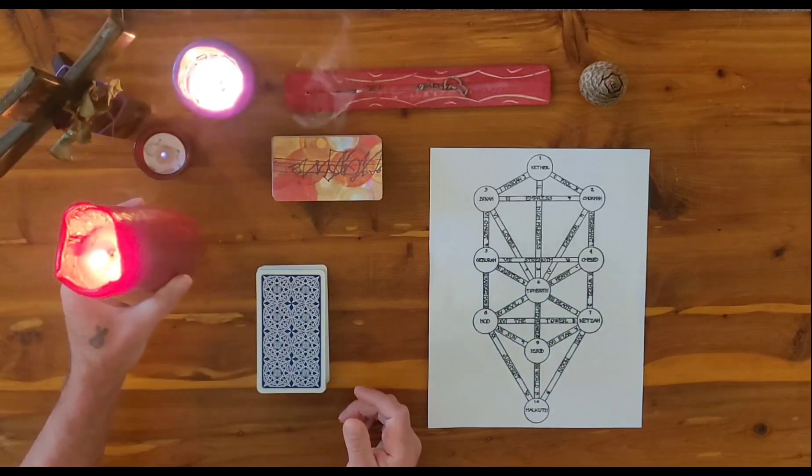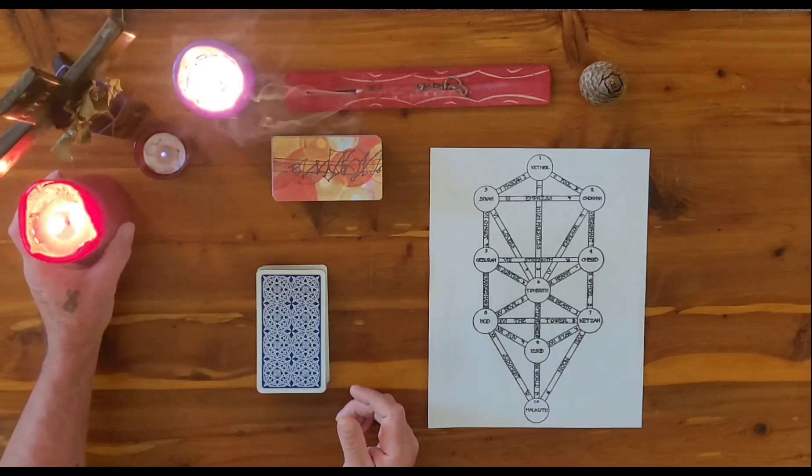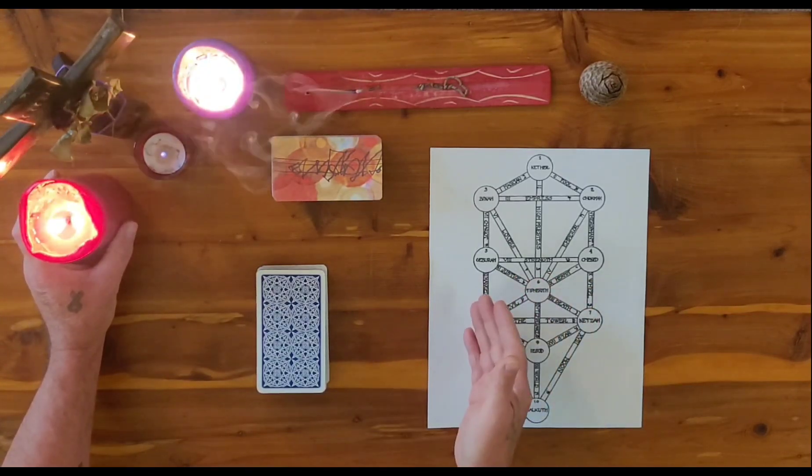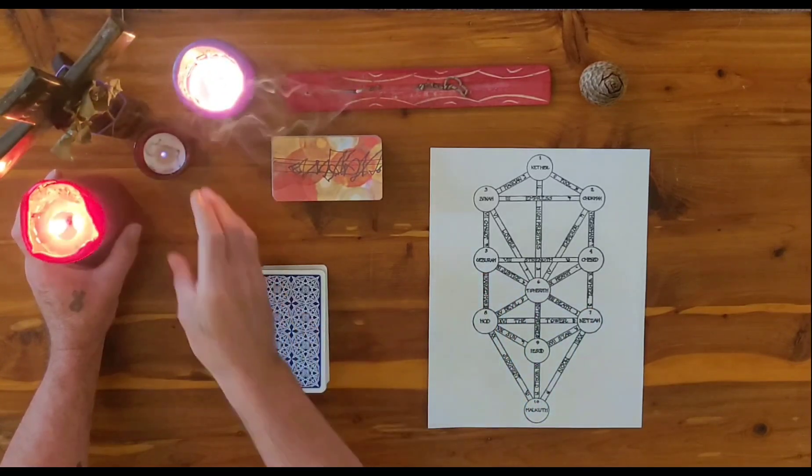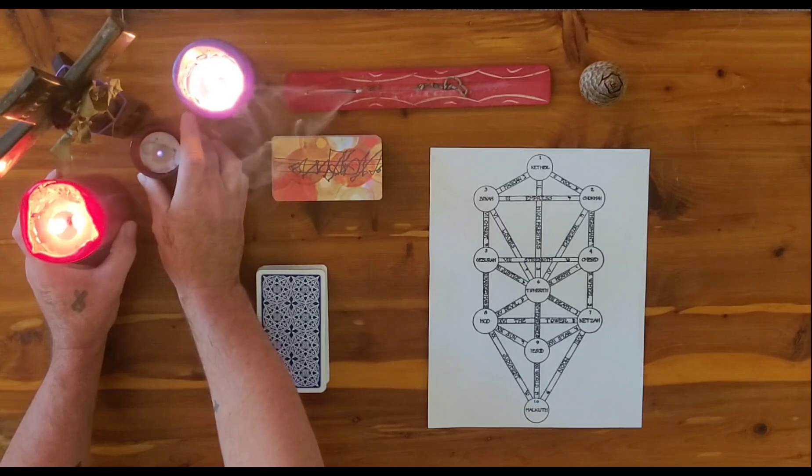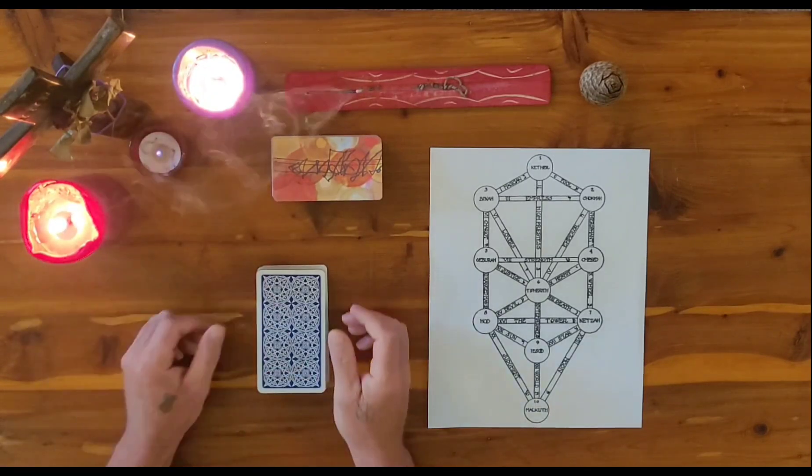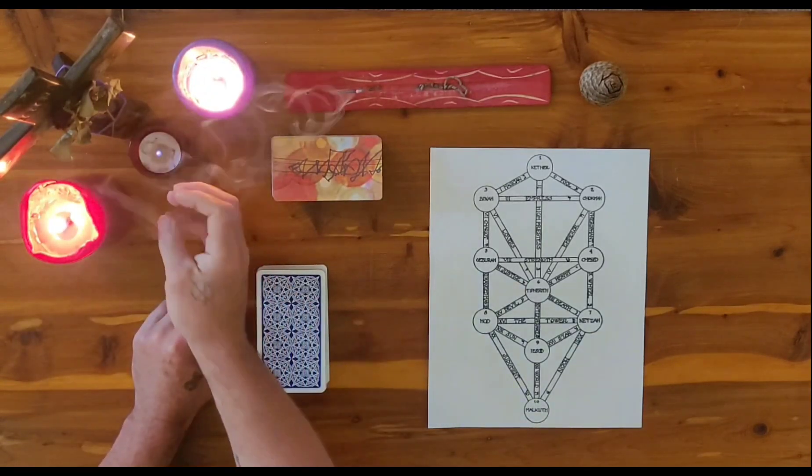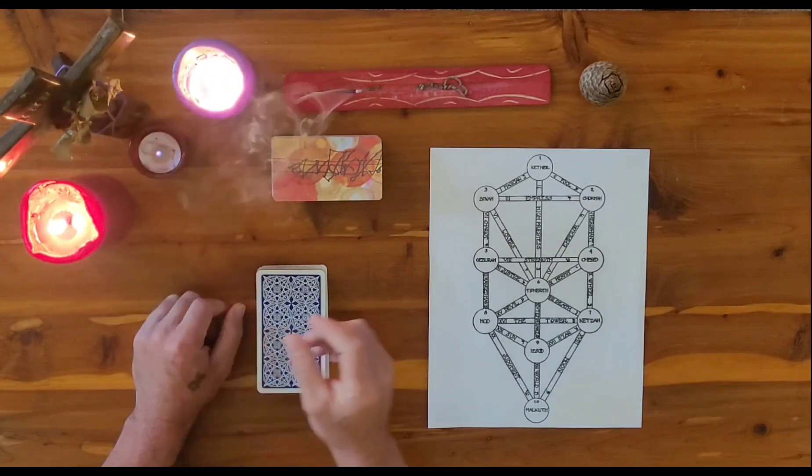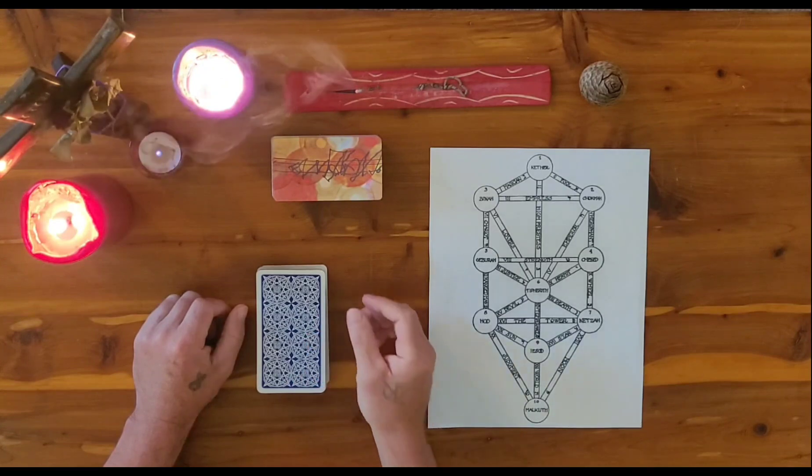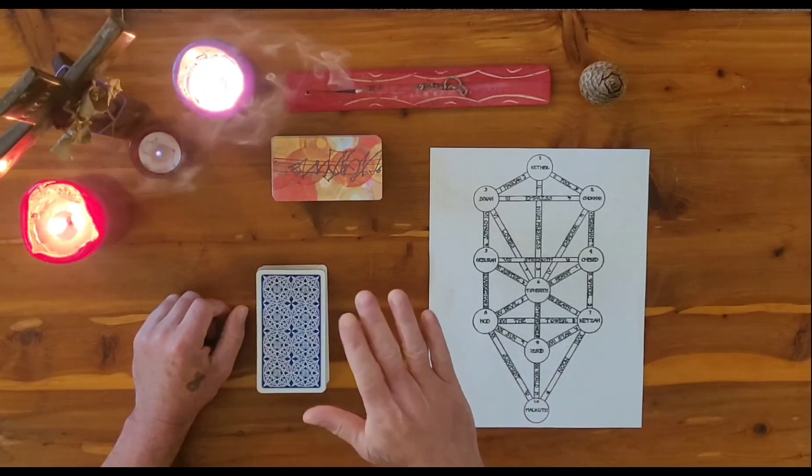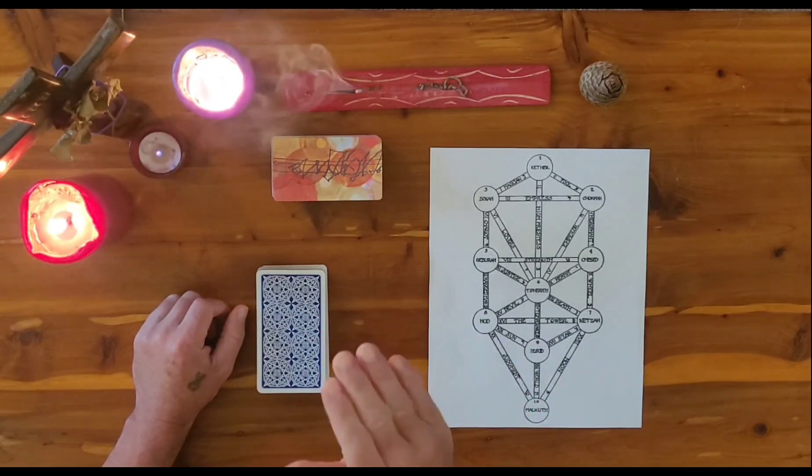And then I have a red candle here that I light, and that is a representation of the left pillar, which is severity. And then I keep a tea light candle lit in the middle to illuminate that middle pillar path to divine consciousness, and intuition, and getting in flow with the natural laws.